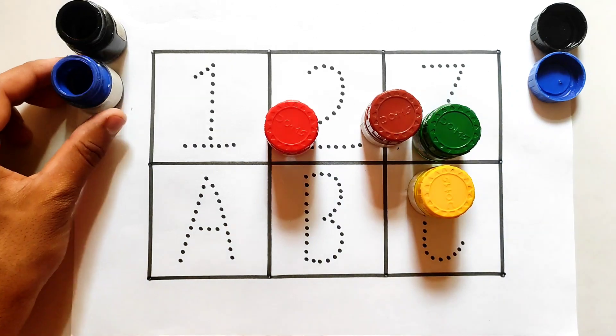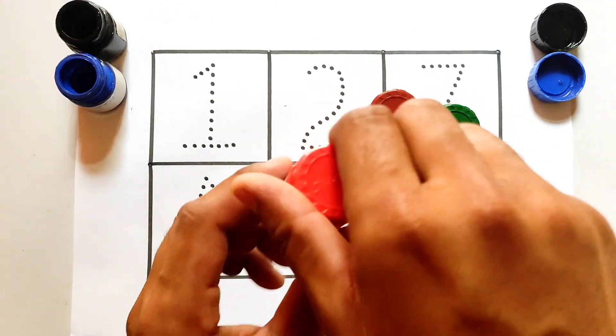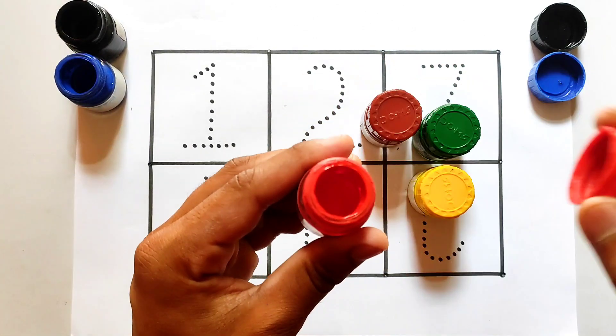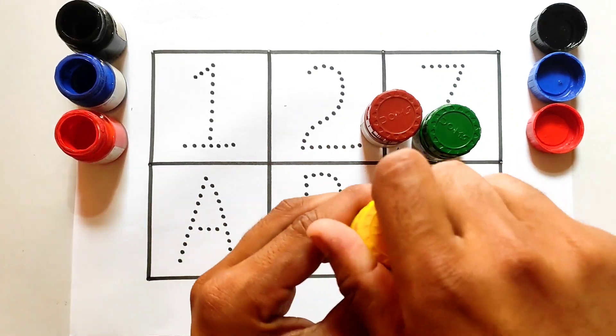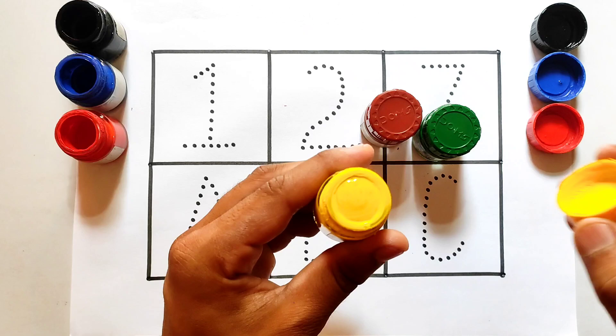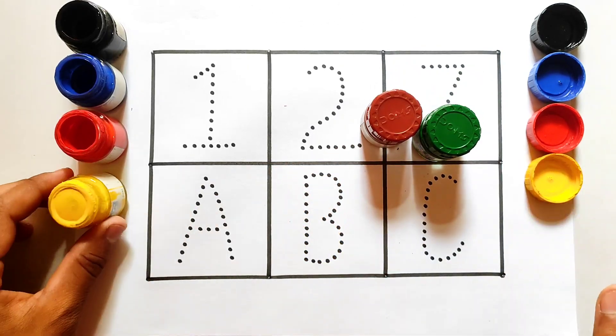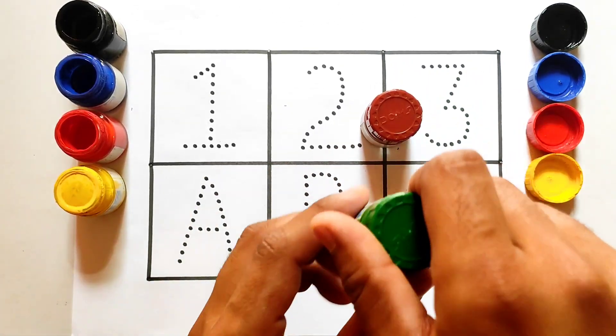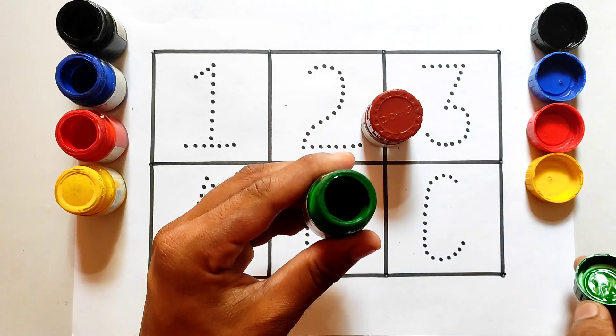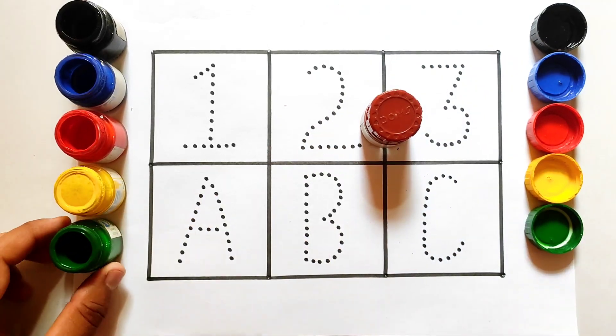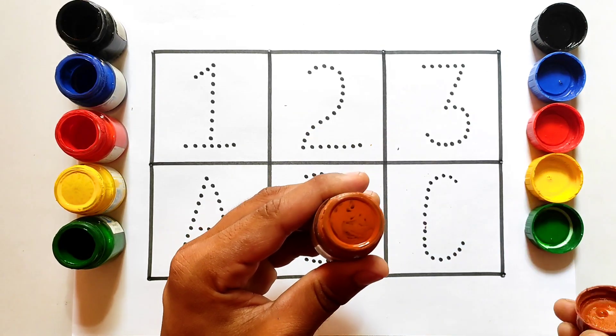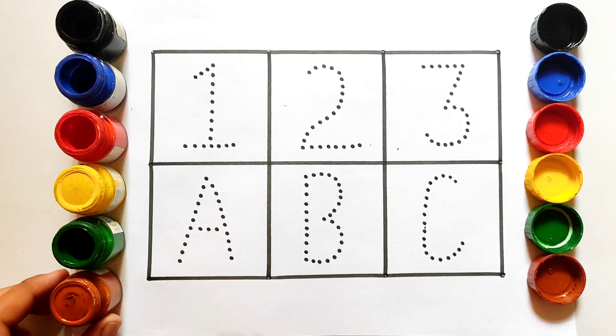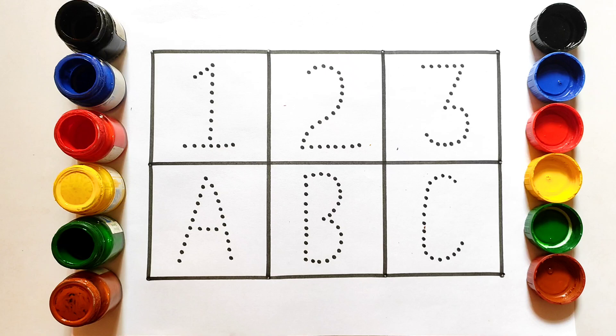This is red color. Which color kids? Red color. This is yellow color. Which color? Yellow color. This is green color. Which color? Green color. And this is brown color. Which color kids? Brown color.